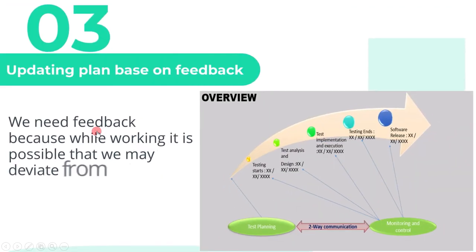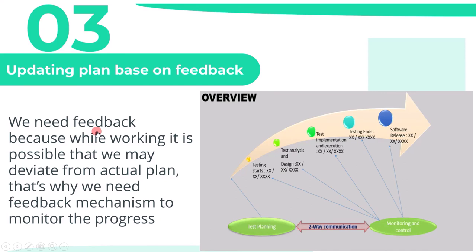The third main activity of test planning is updating plan based on feedback. We need feedback because while working it is possible that we may deviate from the actual plan. That's why we need a feedback mechanism to monitor the progress.